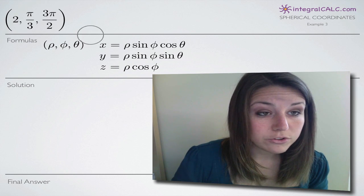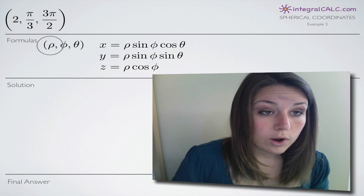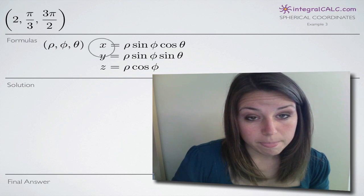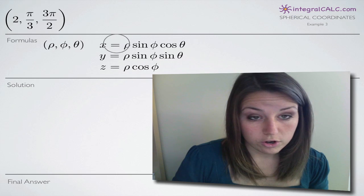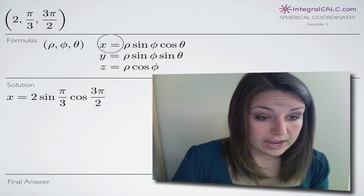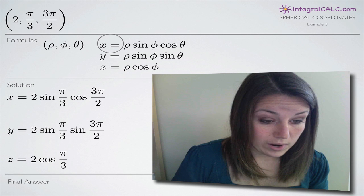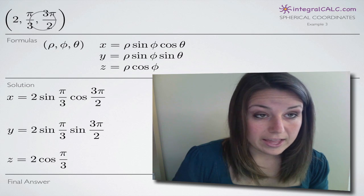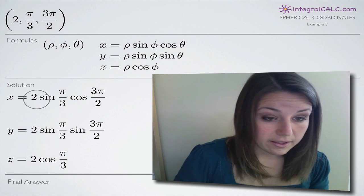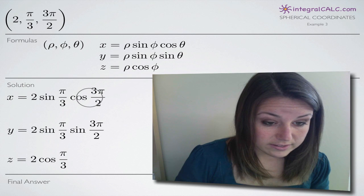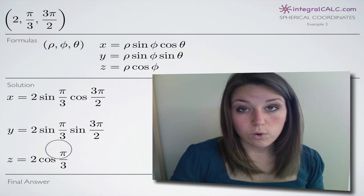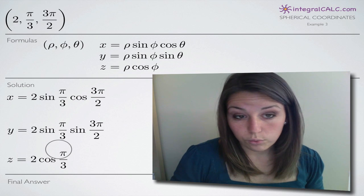The first thing that we'll do is plug in 2 for rho, pi over 3 for phi, and 3 pi over 2 for theta everywhere those variables occur in these formulas. What we'll get are the following three formulas for x, y, and z. Notice that we plugged in 2 for rho, pi over 3 for phi, and 3 pi over 2 for theta, which gives us our x equation, our y equation, and our z equation. If we just simplify the three of these, we'll get our Cartesian or rectangular coordinates.